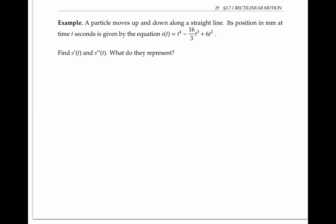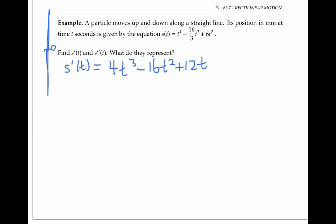In this example, a particle is moving up and down along a straight line, and its position is given by this equation, where positive positions mean the particle is above its baseline position — whatever I'm calling position zero — and negative positions mean the particle is below this baseline. I'm asked to find s'(t) and s''(t). By deriving, I get 4t³ - 16t² + 12t for the first derivative, and 12t² - 32t + 12 for the second derivative.